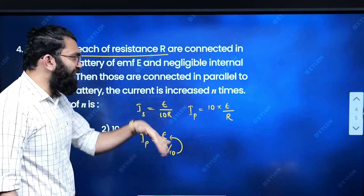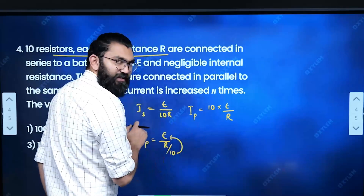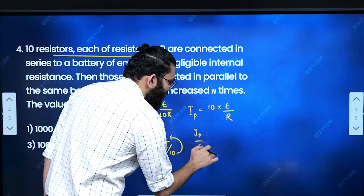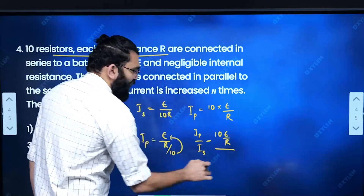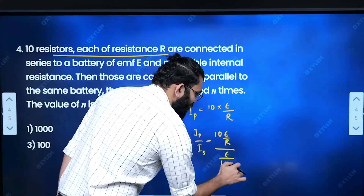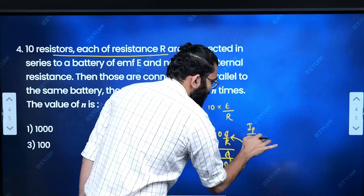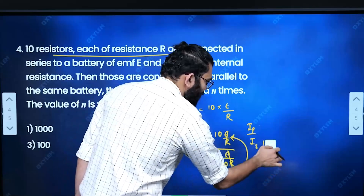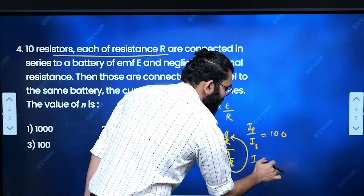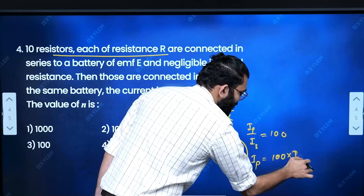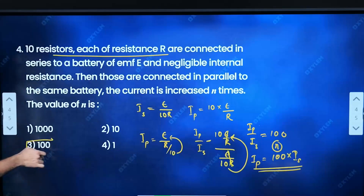Current increased N times when connected in parallel. Parallel current = 10 × E/R (since 10 resistors each R in parallel gives R/10 equivalent). Series current = E/(10R). Dividing: parallel/series = (10E/R) / (E/10R) = 10 × 10 = 100. So parallel current is 100 times series current, meaning N = 100. Option 3 is the right answer.